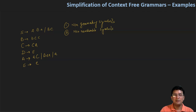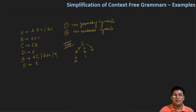Sabse pehle hum log non-generating symbols ko detect karte hain. Step one mein hum aisa sabhi symbols jo non-generating hain ya terminal symbols ko generate nahi karta hai — let's say hum leke aate hain small b, small c. Iska matlab hai ki b se bhi terminal symbol pe pahunch sakte hain. Iska matlab hai ki S se terminal symbol pe pahunch sakte hain, A se bhi terminal symbol pe pahunch sakte hain. Isliye ye kahenge ki S, A, B hamare generating symbols hain.